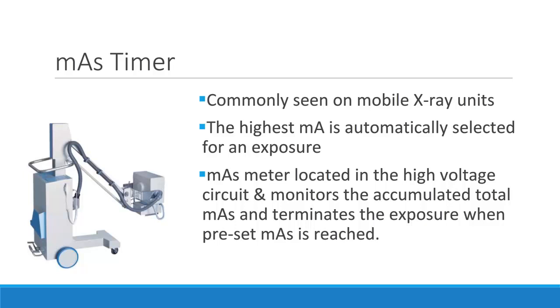This can be an issue when a very long or very short exposure time is desired. For example, a breathing technique is not possible for most mobile units. Additionally, a large body habitus requiring a high MAS would be a challenge on a patient that is moving or is not able to stop breathing with this type of timer.